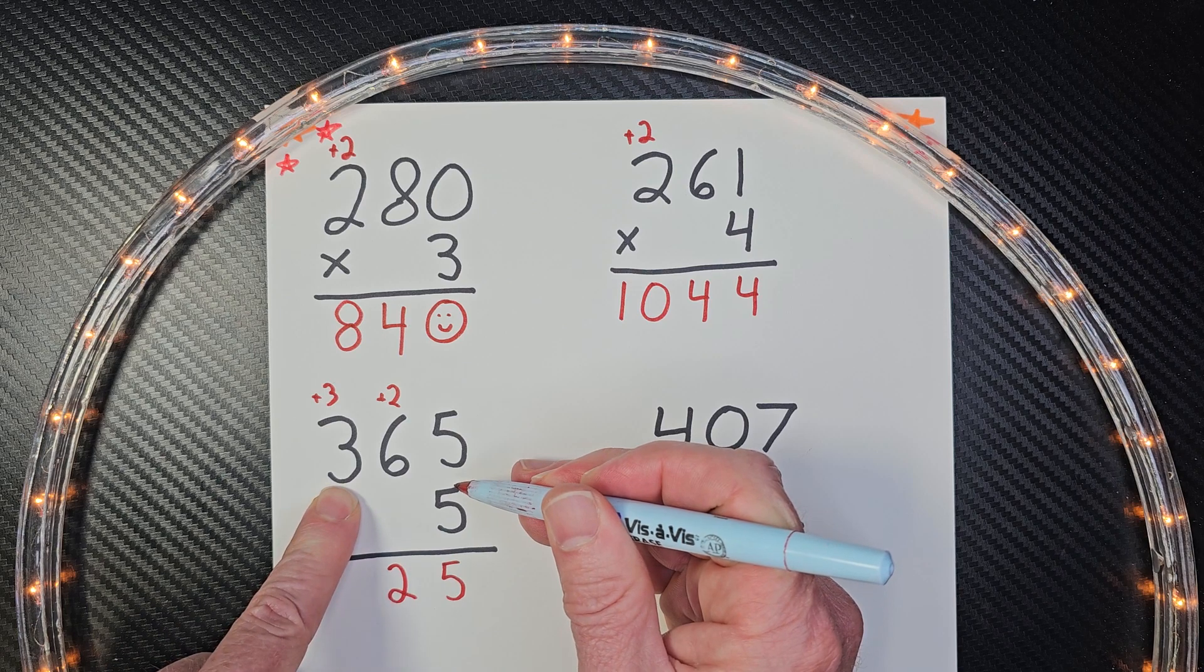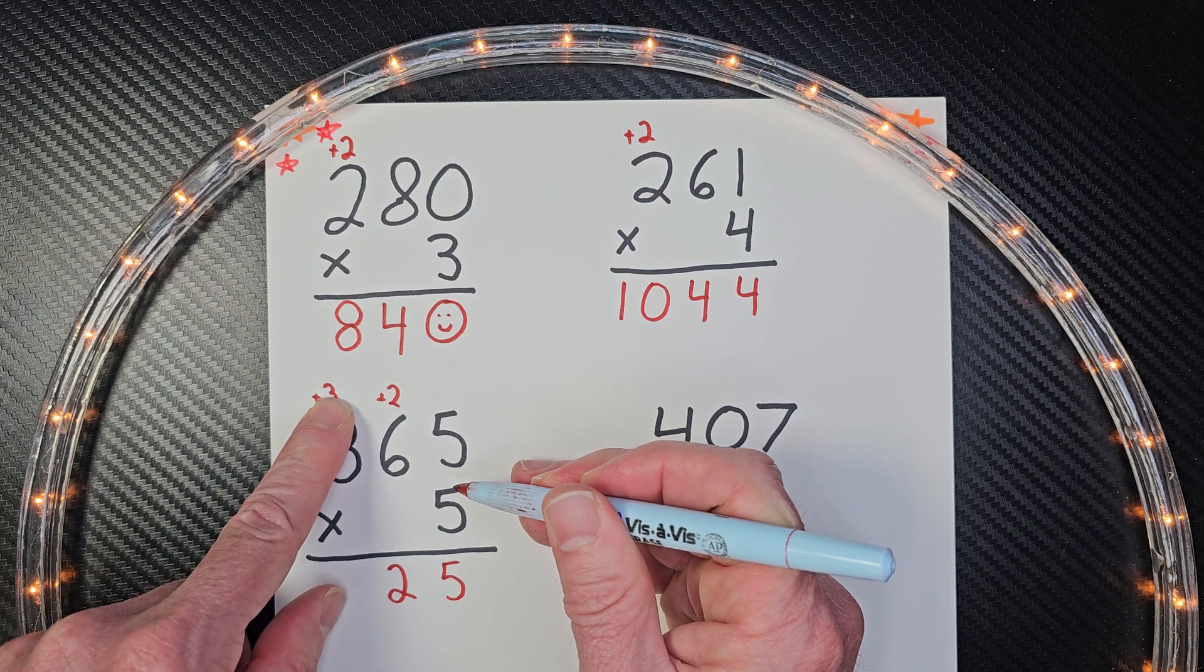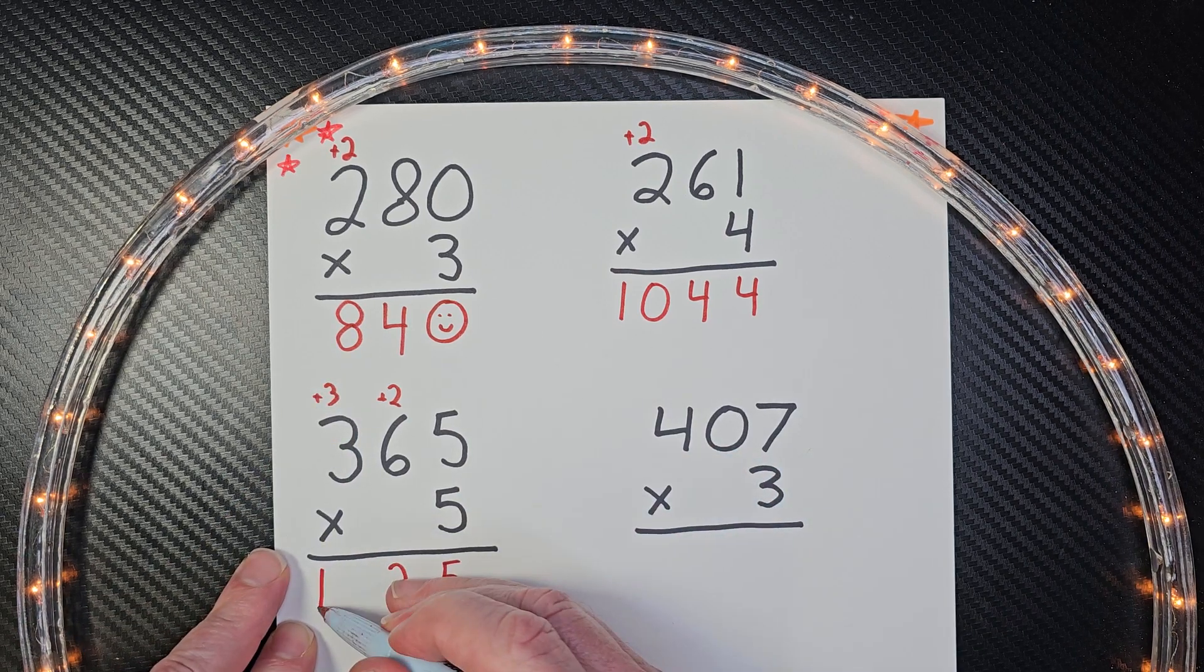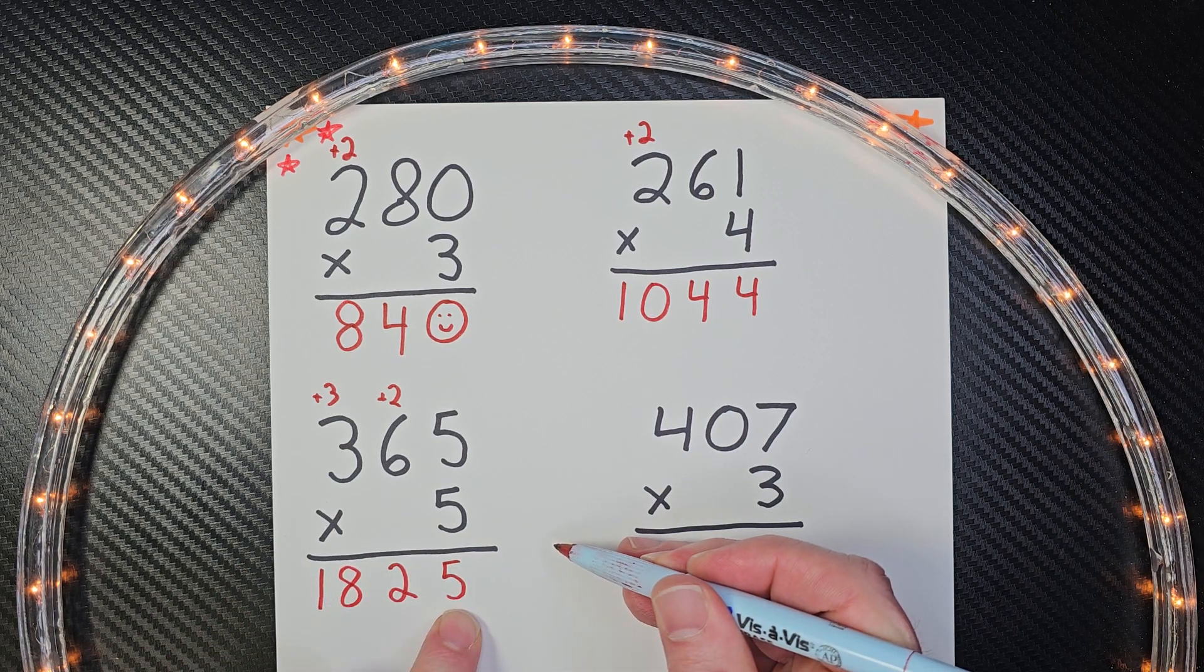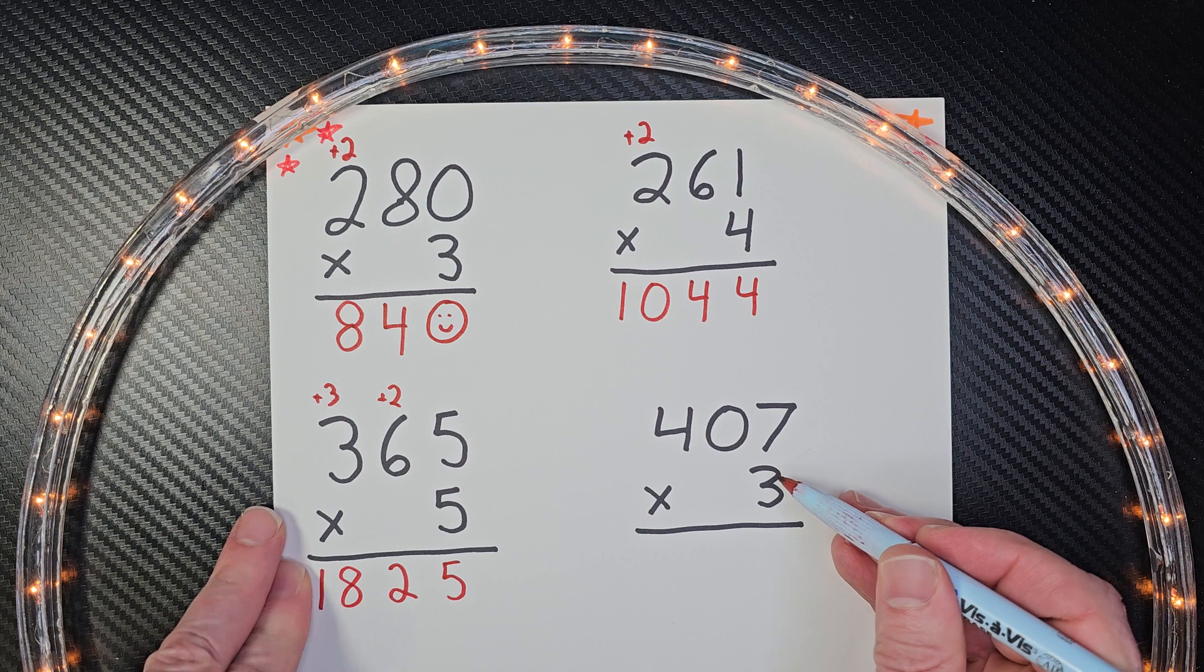Five times three is 15, 16, 17, 18. So our answer is 1825. All right, let's do the fourth problem here.